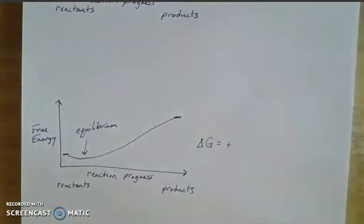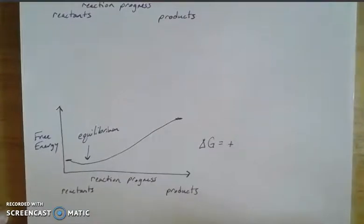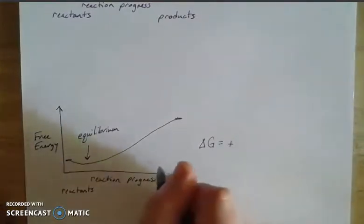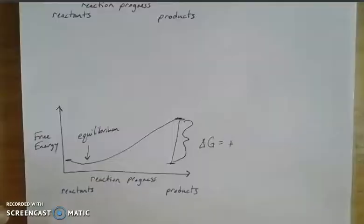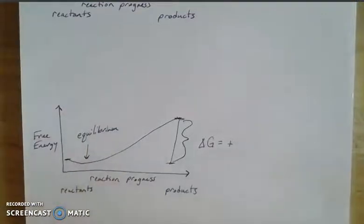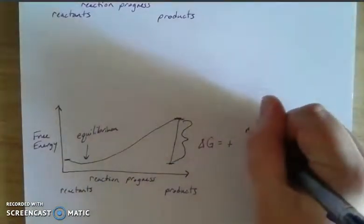And then my delta G is going to be a positive value. And when we're thinking about our delta G, we're really just taking the difference, as we have with enthalpies and all of our other reaction conditions. We take the difference between the reactants and the products, and then that difference gives us our delta G. If I end with something that's higher than my initial quantity, that gives me a positive difference. So this would be a non-spontaneous process.